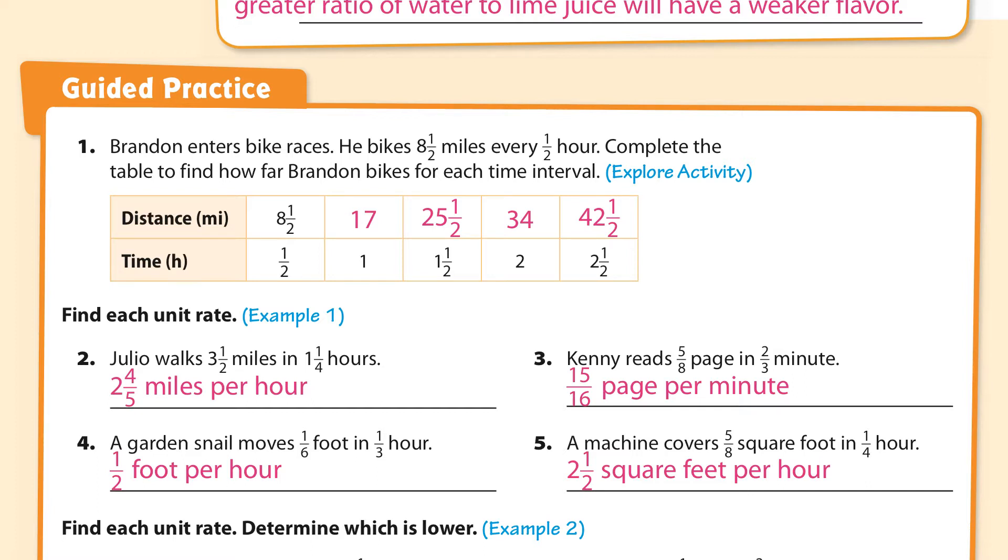You can see all the answers, but I'm going to explain how to arrive at each of those answers now. Brandon enters bike races. He bikes 8.5 miles every half hour. That's what's right here. Complete the table to find how far Brandon bikes for each time interval. Let's take a look at the unit rate. This right here is the unit rate because it's per one hour.